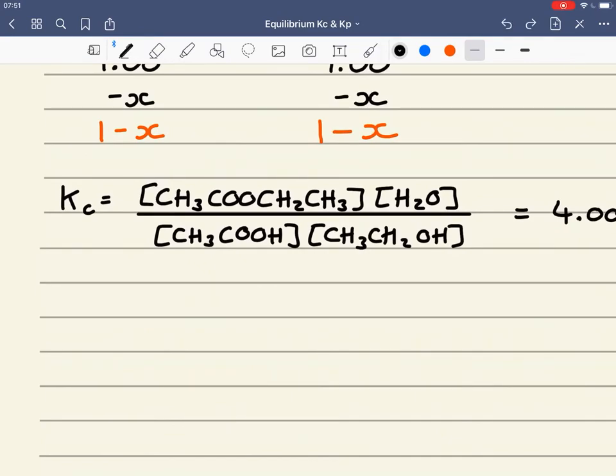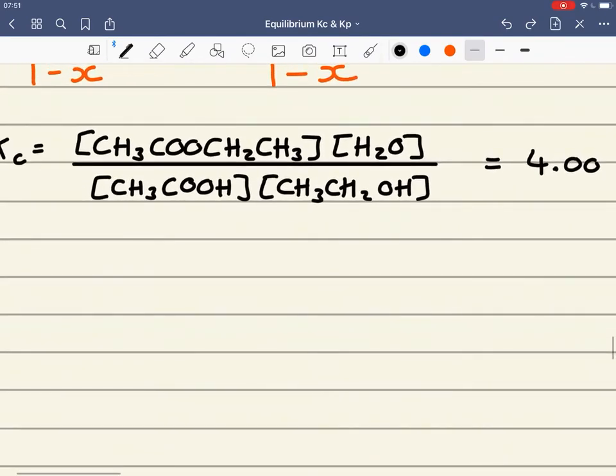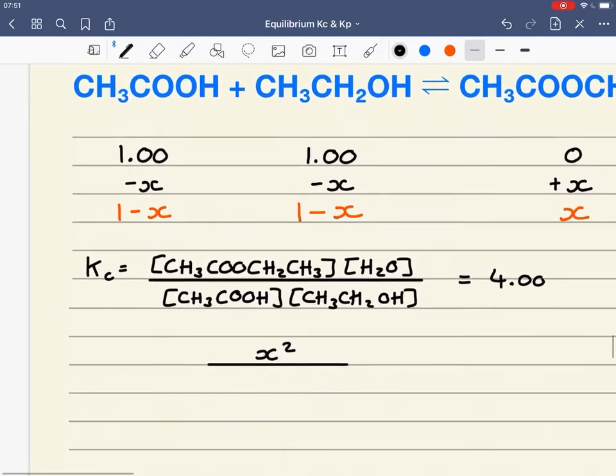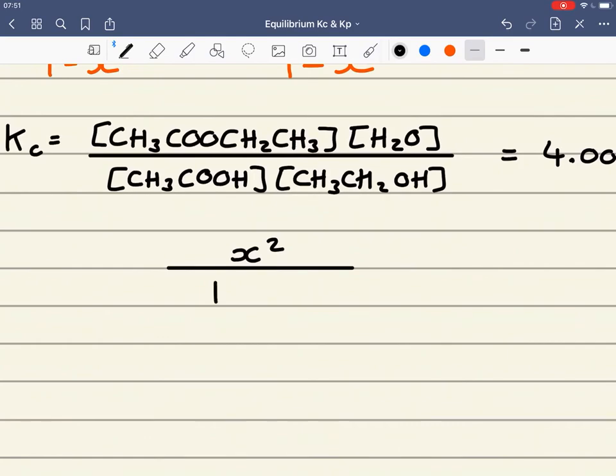So the number of moles of ester is X, times the number of moles of water, which is also X. That gives me X squared. Divided by the number of moles of ethanoic acid, times the number of moles of the ethanol, 1 minus X times 1 minus X, and that gives me (1 minus X) squared.